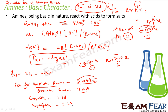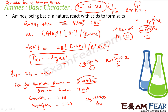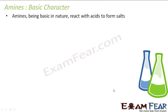However, the +I effect is not the only factor — steric hindrance also plays a role. For trimethylamine (CH₃)₃N, the expectation is that it should be more basic than dimethylamine, but actually it is less basic because steric hindrance reduces the space available for nitrogen to accept a proton.